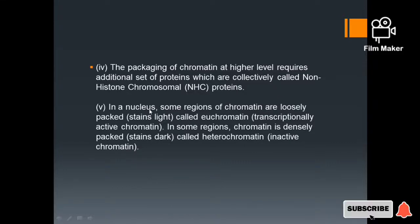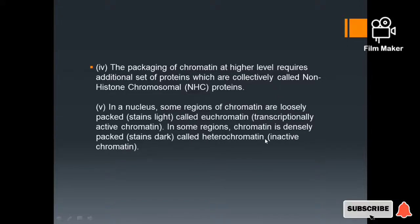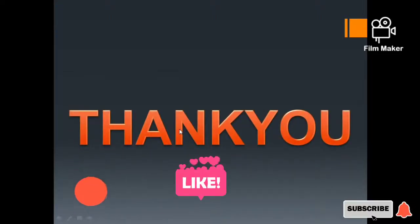In a nucleus, some regions of chromatin are loosely packed — these are called euchromatin. In other regions, the chromatin is tightly packed and stains darkly — this is called heterochromatin. If you like this explanation, please share and subscribe to Sharda's Botany. Thank you.